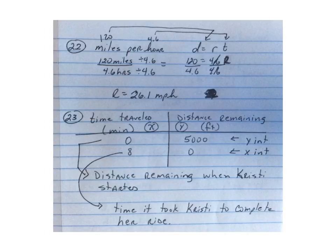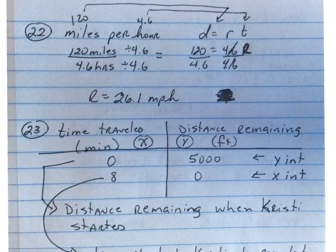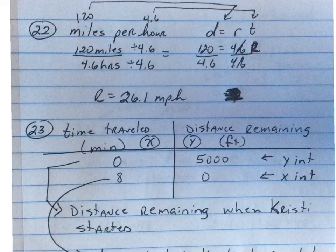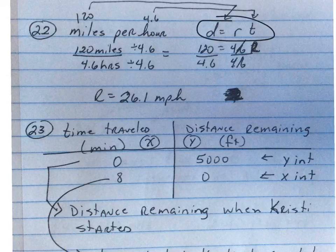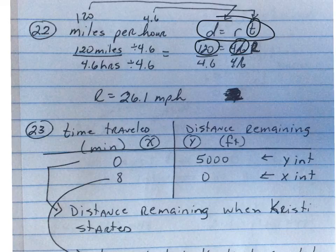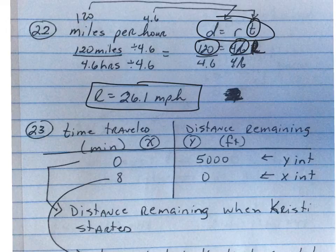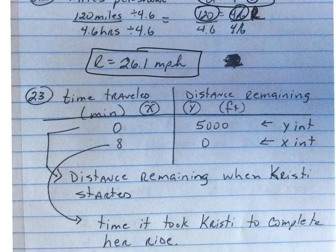On number 22, on this problem, you're looking at miles per hour. So it's 120 miles in 4.6 hours. I just divided 120 divided by 4.6. If you use this formula, distance is 120, your time is 4.6, and you want to solve for R. Divide both sides by 4.6, and you end up getting a rate of 26.1 miles per hour.